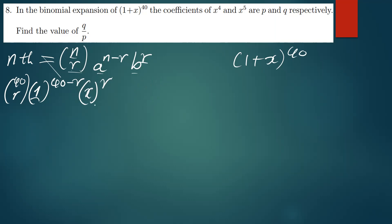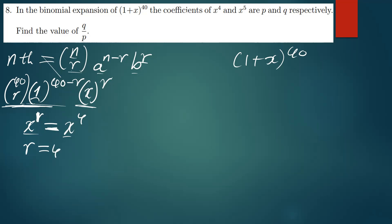I'm going to ignore the coefficient and just collect the parts which contain x. This gives x^r. I then equate this to x^4. When the bases are equal, the powers must also be equal, meaning r = 4. So at the term which contains x^4, the value of r is 4.